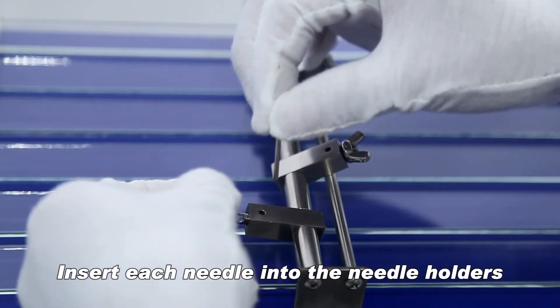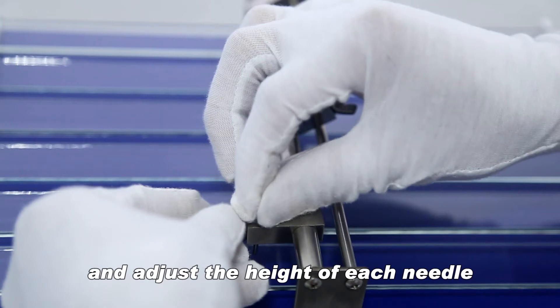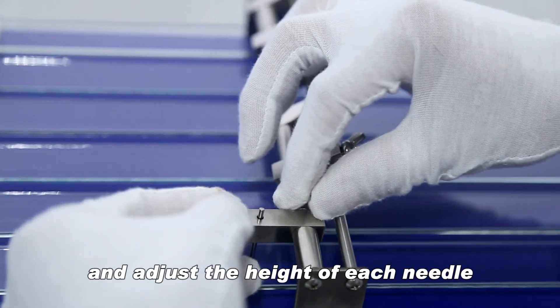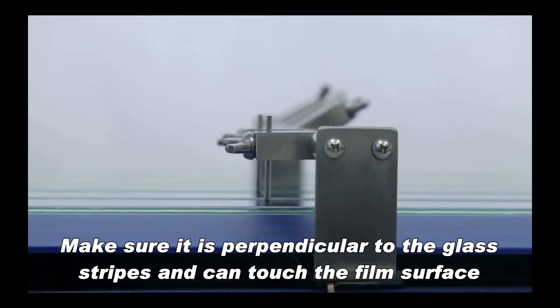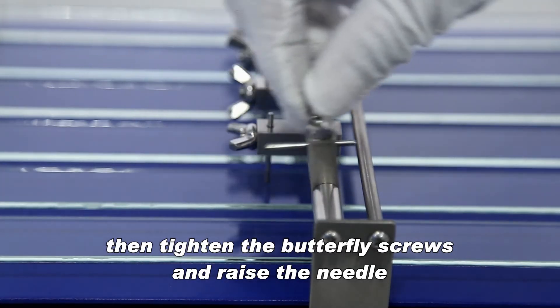Insert each needle into the needle holders and adjust the height of each needle. Tighten the screw, make sure it is perpendicular to the glass stripes and can touch the film surface. Then tighten the butterfly screws and raise the needle.